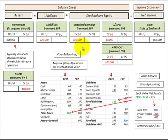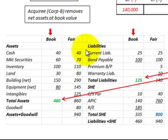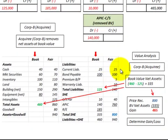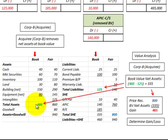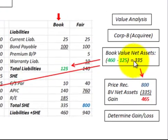Now let's look at this acquisition from the perspective of the corporation being bought out — Corporation B. It's not the fair value we're concerned with here, but the book value that Corporation B carries for its assets and liabilities. We need to determine any gain or loss on this transaction. Using the book value of net assets: total assets at book value of $460,000 less total liabilities at book value of $125,000 gives a net book value of $335,000.